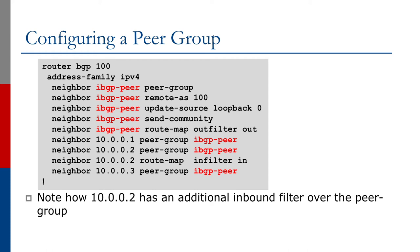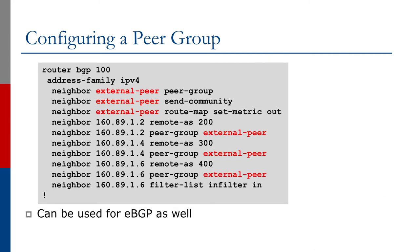Note that neighbor 10.0.0.2 also has a separate inbound policy. We can use the Peer Group for external BGP as well. This is most commonly seen at Internet Exchange Points, where a member of an Internet Exchange Point will have the same outbound policy to many peers at that exchange point — very useful for ease of management of the large number of peers you typically see at an Internet Exchange Point.